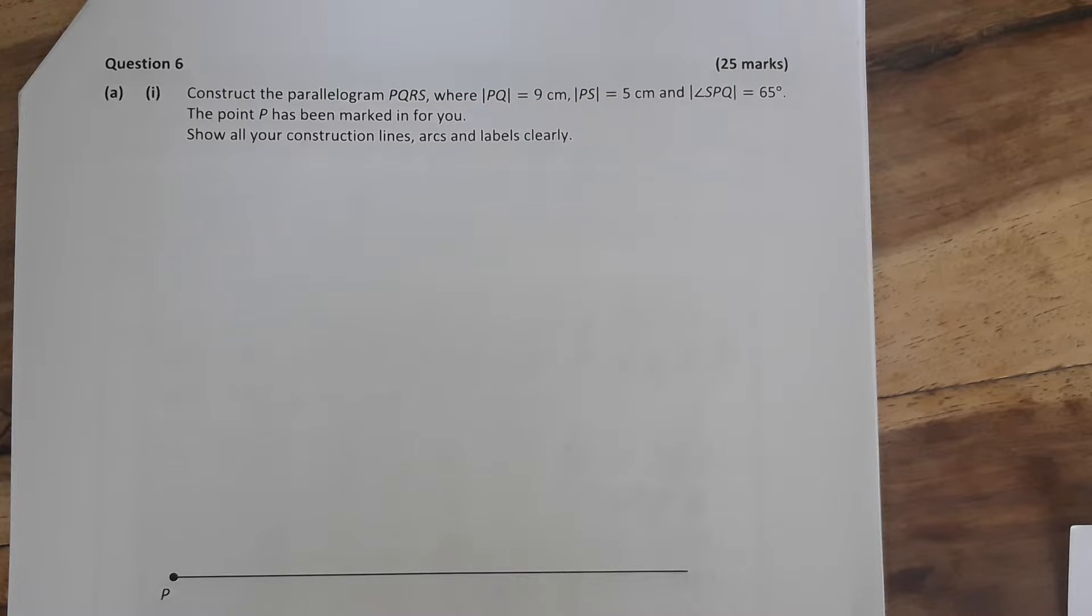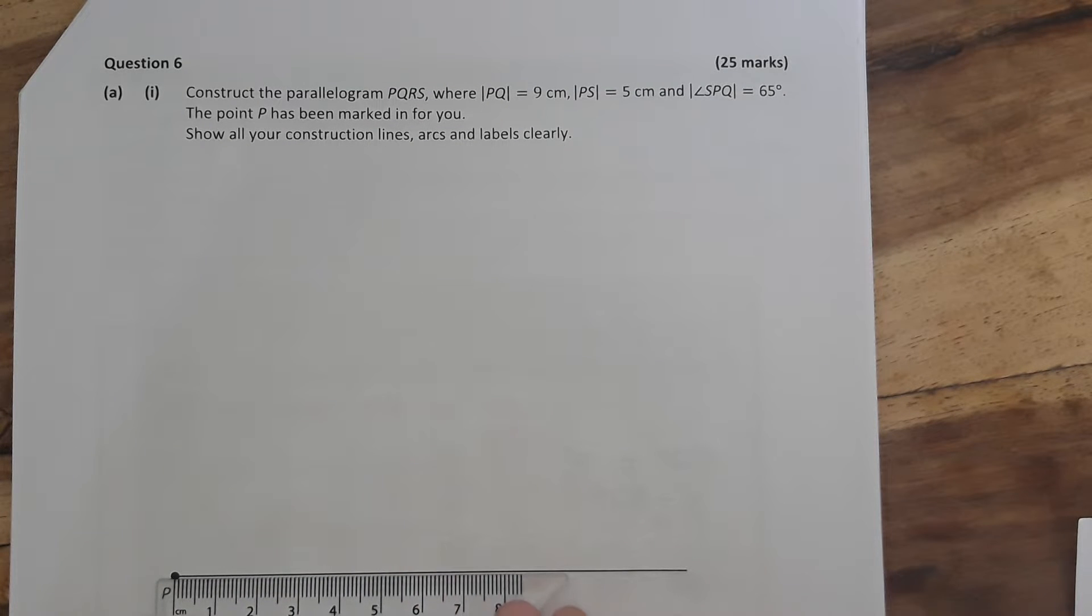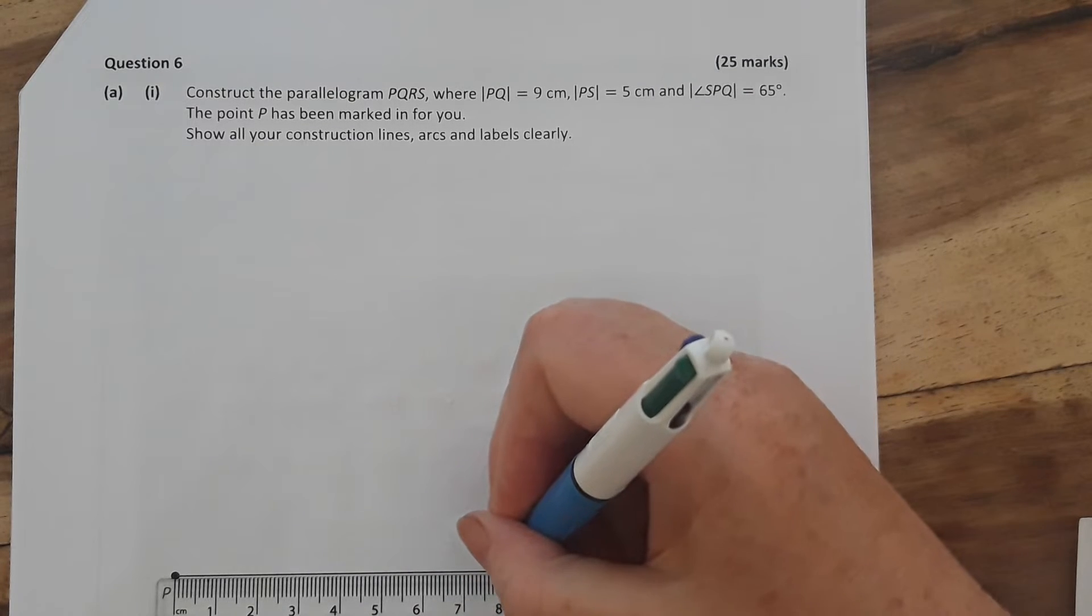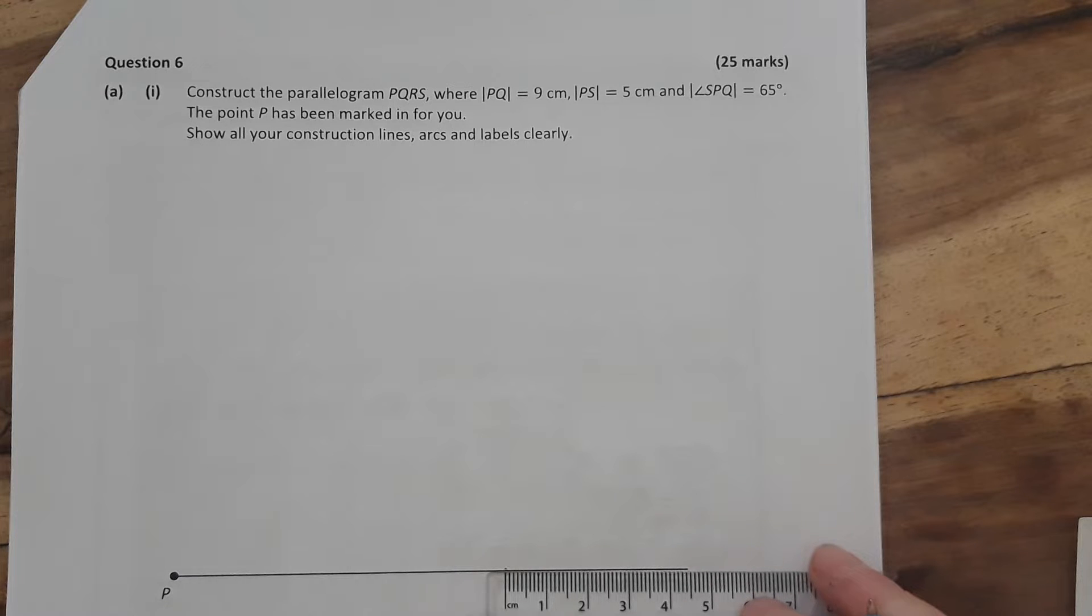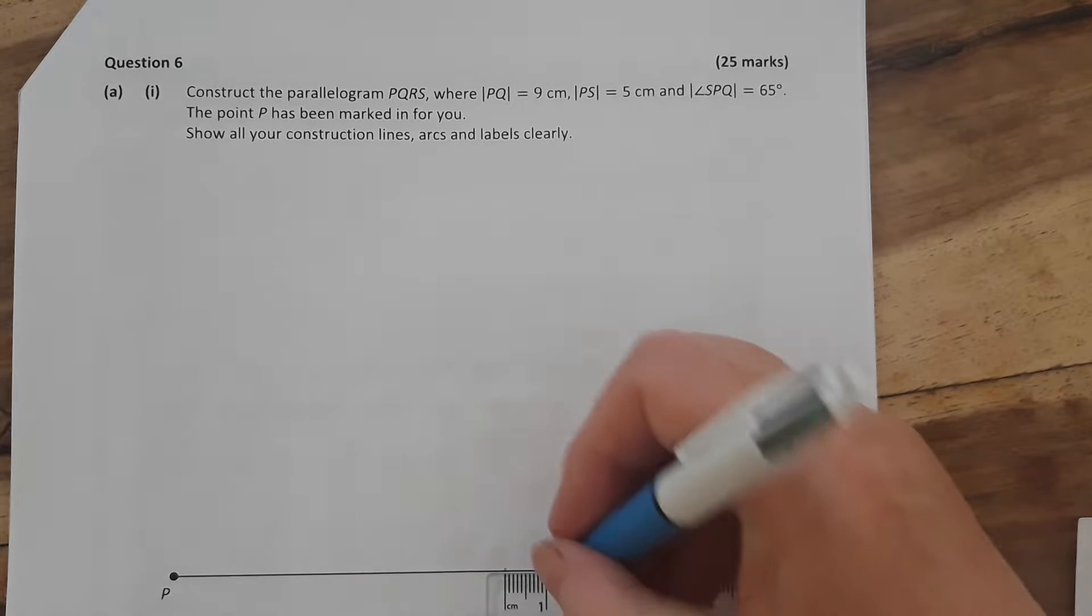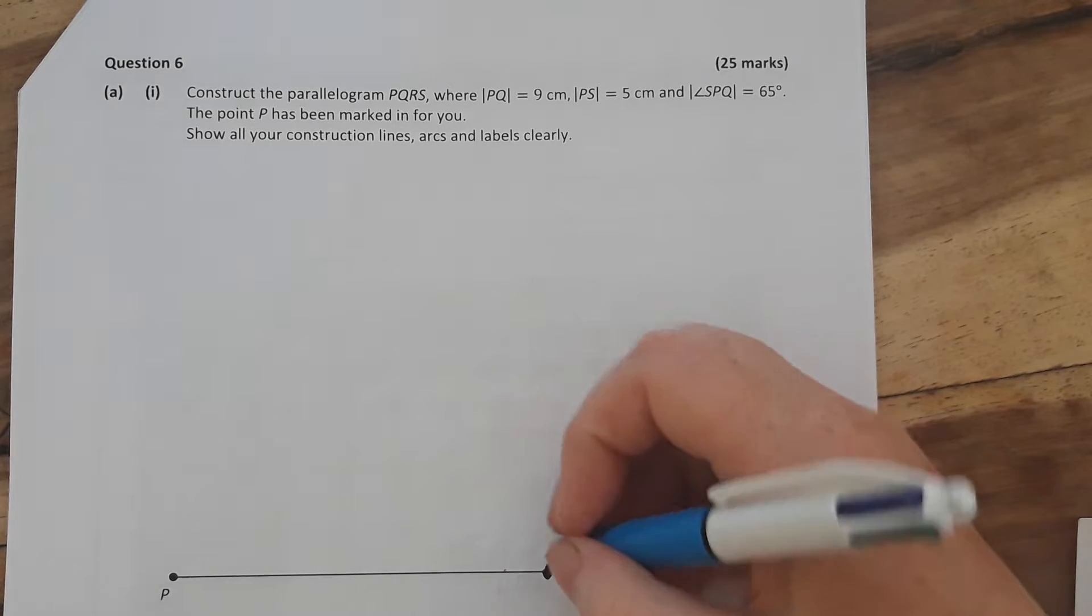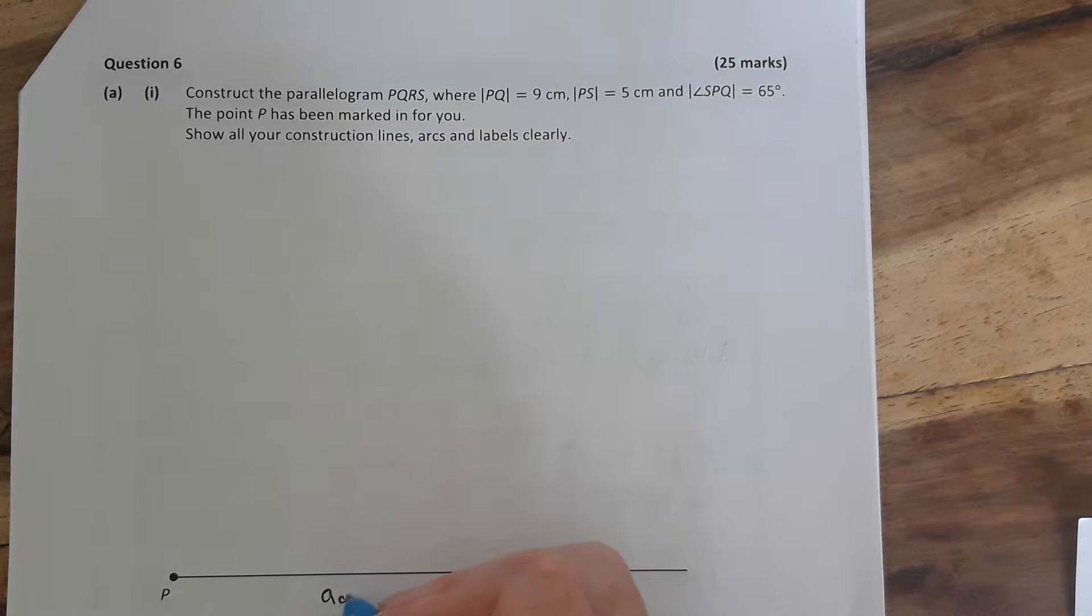So the first thing we're going to do is measure out PQ. Now we have P here, so we need nine centimeters. I can't find my ruler, so this is only eight centimeters long. I'm going to mark in eight centimeters and then measure an extra centimeter, but if you have your ruler, just go straight ahead and mark in your nine centimeters. Now please make sure you do this accurately, take your time and measure correctly.